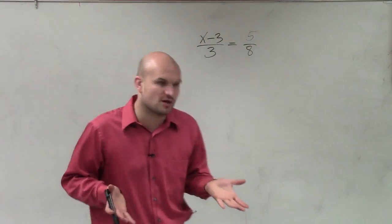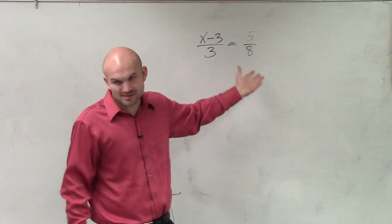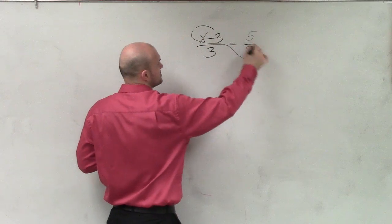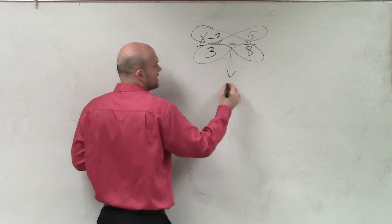I'm probably going to want to choose cross multiplication. I can multiply both sides by 3 and by 8, but I'm going to be dealing with some fractions. So I'm going to elect to use the cross products. So I cross product there, and I cross product there. Make sure you bring down the equal sign.